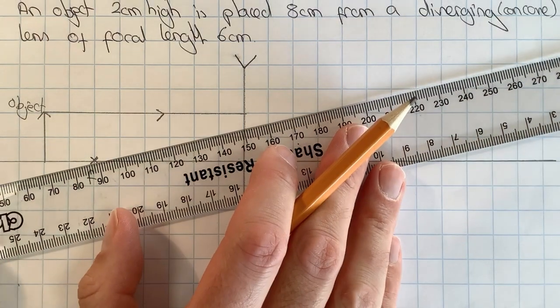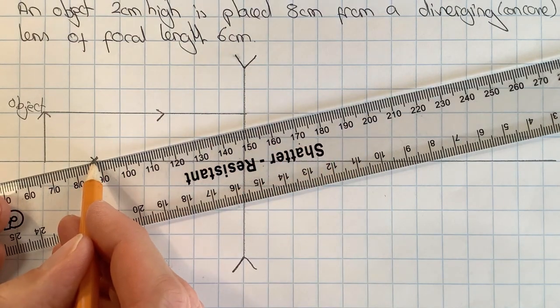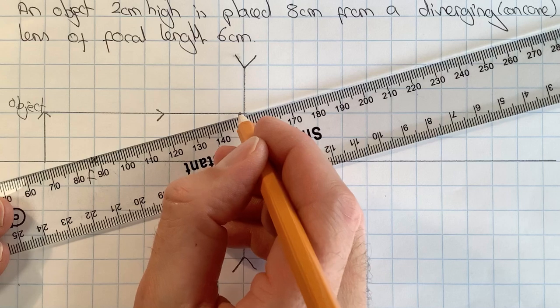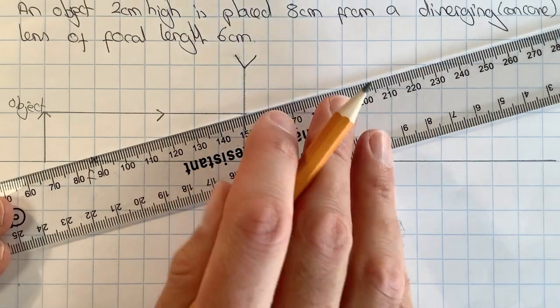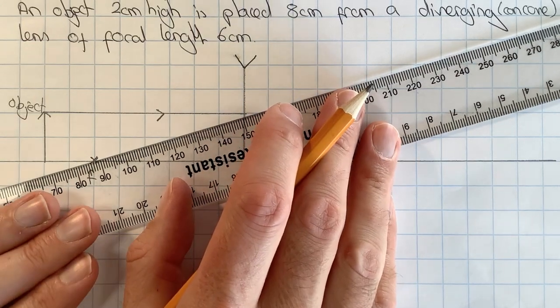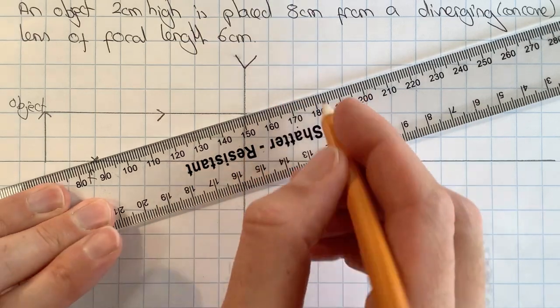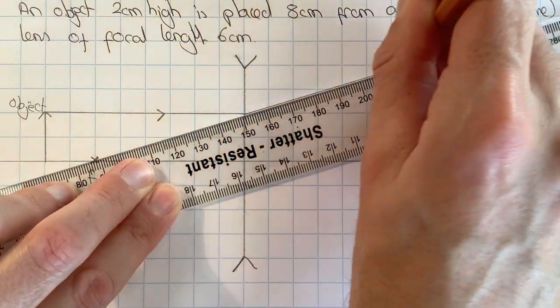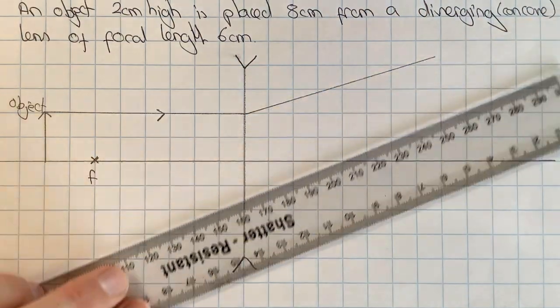So what I now need to do is line up my ruler with the focus here and where that ray hit the lens there, and when I've carefully lined those up I can draw a solid line to show what the ray does going through the lens.